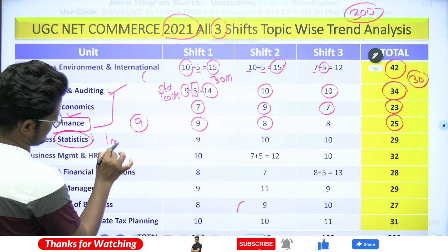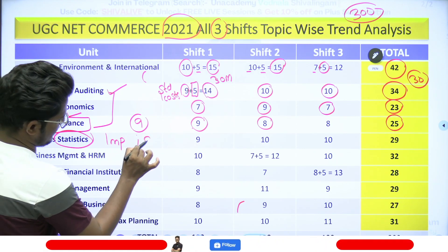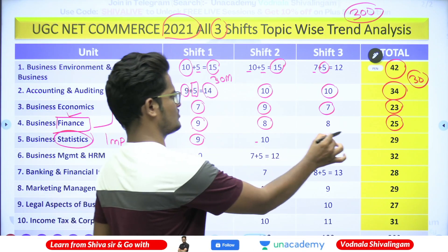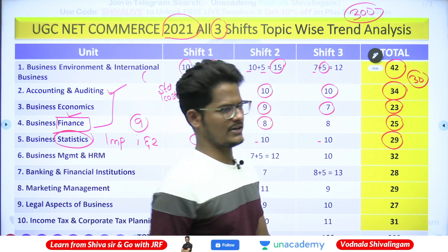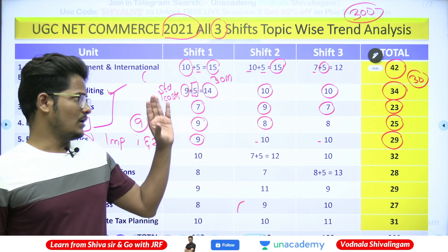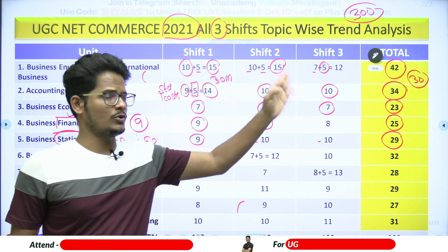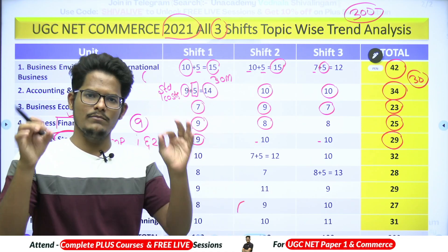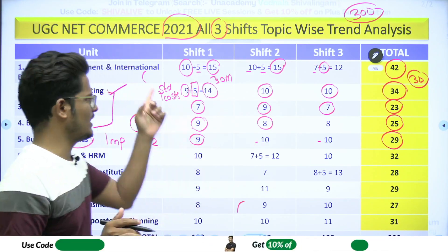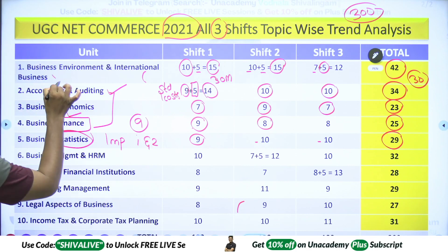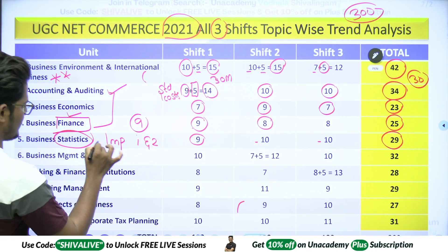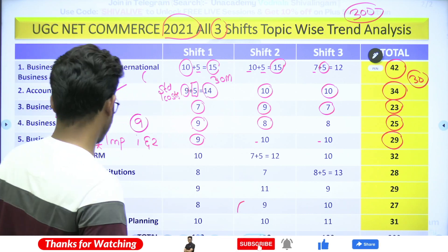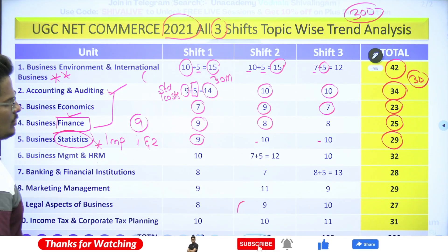Business Statistics is always important for UGC NET — both Paper 1 and Paper 2. Shift 1 had 9 questions, Shift 2 had 10, Shift 3 had 10 — minimum 30 questions expected from this unit. Business Statistics is equally important as B&IB; I categorize both as 'A category' units. BM and HRM is also a star-category unit.